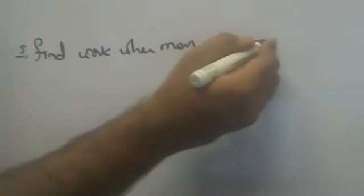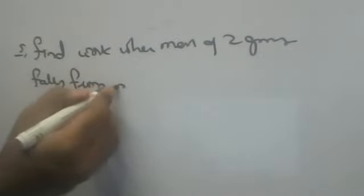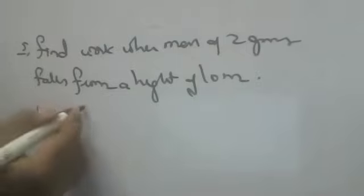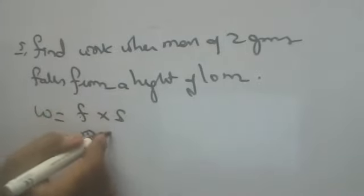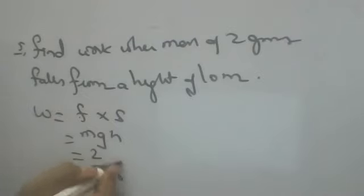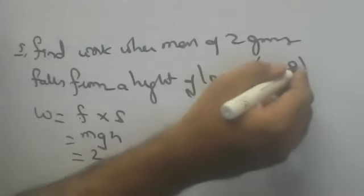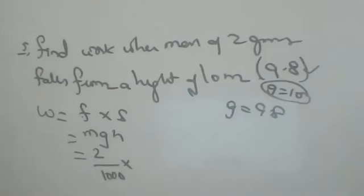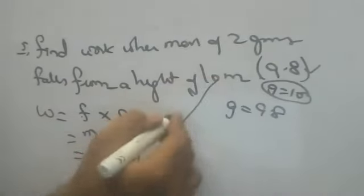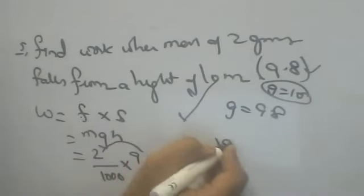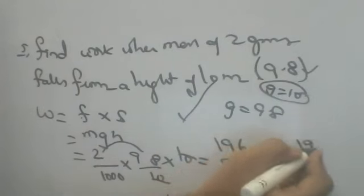Find work done when a mass of 2 grams falls from a height of 10 meters. W = F × S, where F = M × G and S = H (height). Mass is 2 grams — grams to kg, divide by 1000. If no value of g is given, take 9.8. Height is 10 meters. 2 × 9.8 × 10 ÷ 1000 = 196 ÷ 1000 = 0.196 joules is the answer.